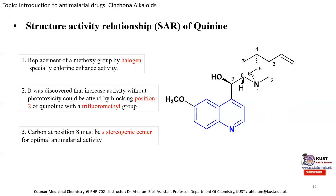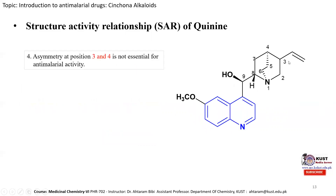The stereogenic center at position 8 must be S for maximum anti-malarial activity. Changing it to R gives quinidine, which is less potent than quinine. The stereogenic centers at positions 3 and 4 of the quinuclidine ring are not essential for anti-malarial activity — whether R or S at these positions does not affect activity.